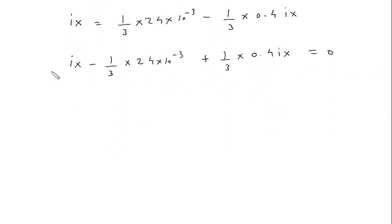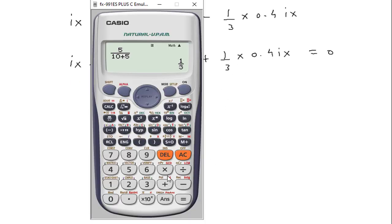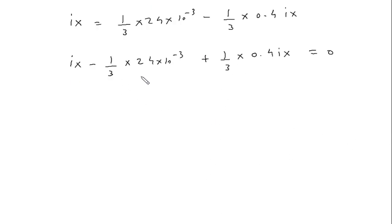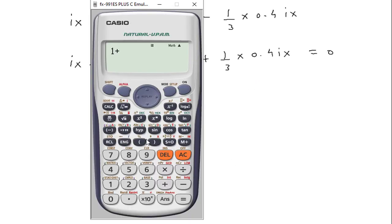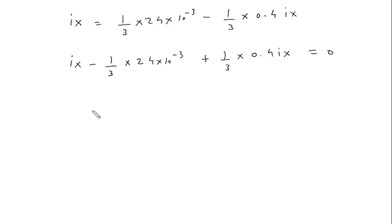So Ix times 1 plus 1 by 3 into 0.4, which gives 17 by 15, equals 1 by 3 into 24 into 10 raised to minus 3.